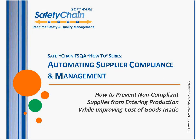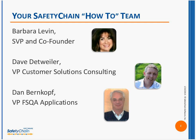Good morning or afternoon everybody, and thank you for joining us for the first of Safety Chain's 2013 Food Safety and Quality Assurance How-To Series: Auditing Supplier Compliance and Management. We're focusing today on prevention versus reaction — talking about how to prevent non-compliant supplies from entering production while also helping improve your cost of goods made KPIs. My name is Carol Levin, one of Safety Chain's co-founders. I'll be joining today with Dave Detweiler, our VP of Customer Solutions, and during the Q&A session we're going to bring in our VP of FSQA Applications, Dan Bernkopf, to chat about any compliance or other FSQA questions you might have.